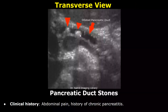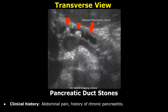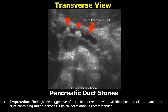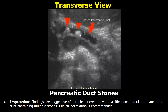Now we will talk about pancreatic duct stones. The clinical history was abdominal pain and history of chronic pancreatitis. In the findings, you can write about the hyperechoic pancreas with calcifications. The pancreatic duct is usually dilated; here it is dilated with a diameter of 8 millimeters and contains multiple echogenic foci suggestive of stones. In the impression: findings are suggestive of chronic pancreatitis with calcifications and a dilated pancreatic duct containing multiple stones. Clinical correlation is recommended.